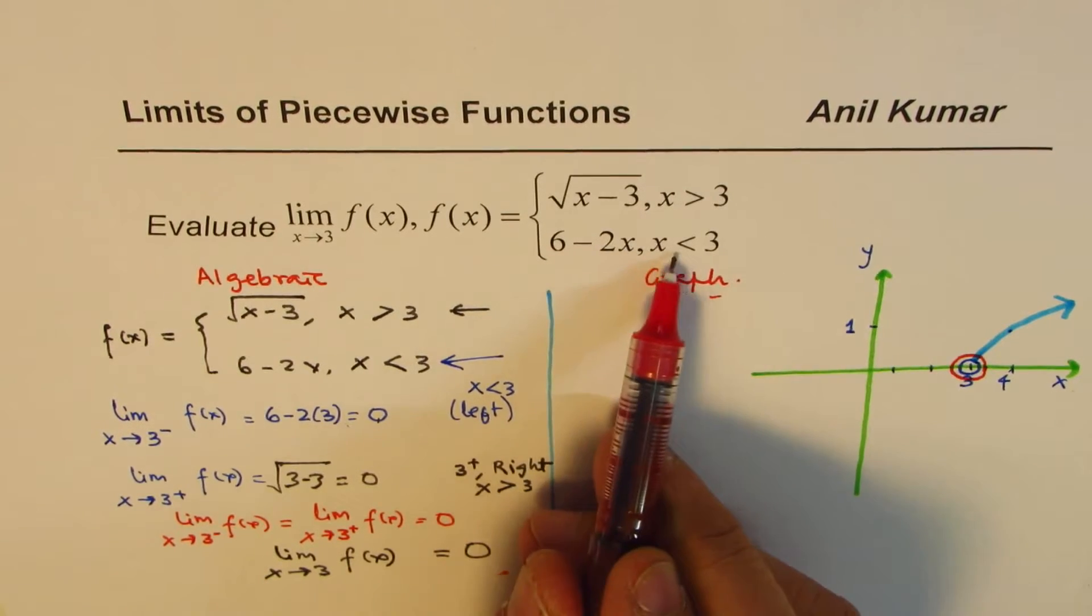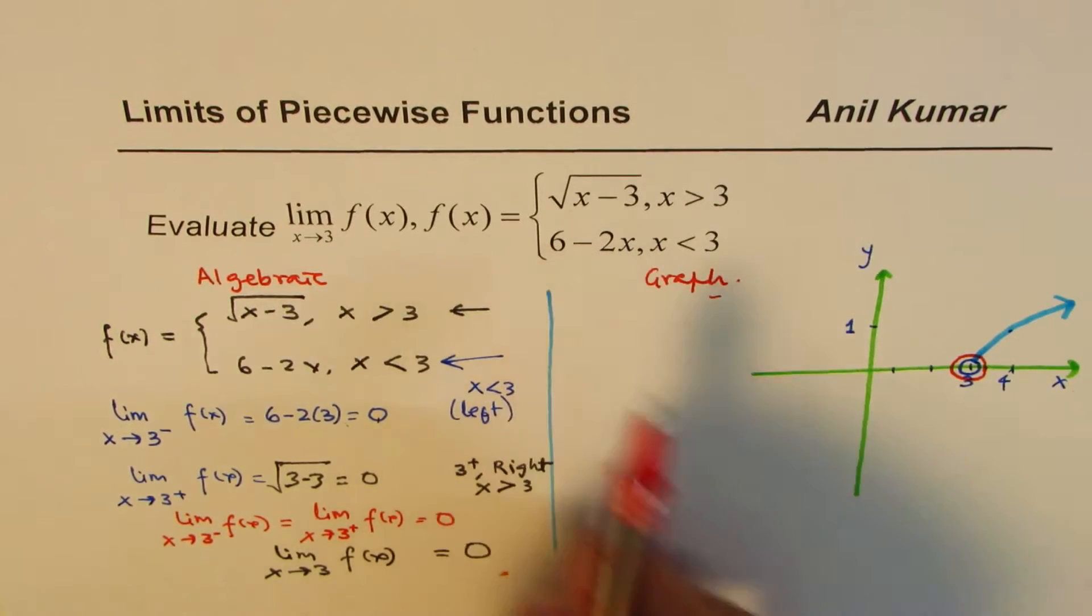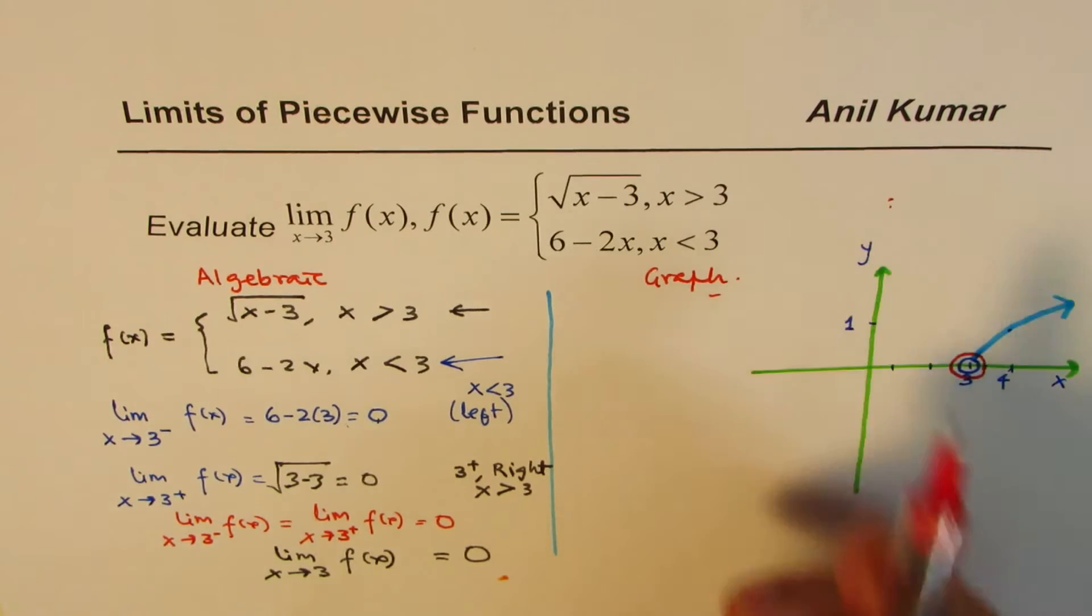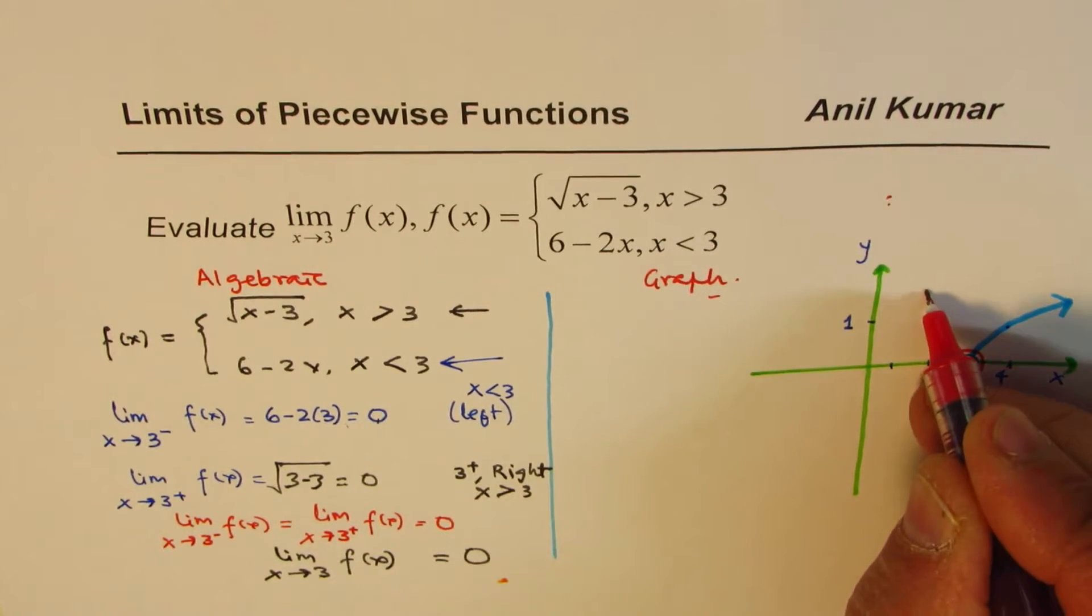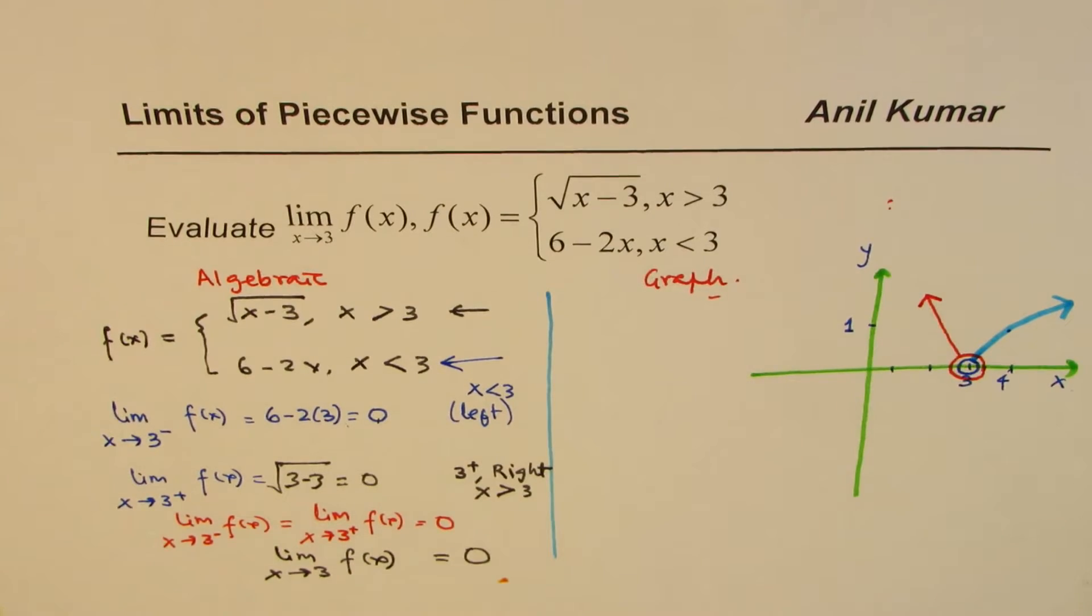At 3, it is 0. And if I write 0 here, I get 6. So kind of somewhere there. So it is a steep line going like this. Let me just draw like this. Perfect.